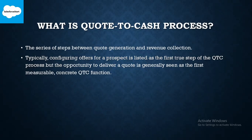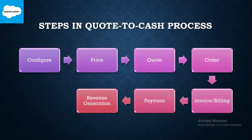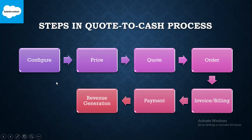I will just go to the steps and show you in the diagram itself. If you see here, the steps flow in this way for the Quote-to-Cash process. The first step is configuration of products, product offers, additional discounts, along with configuration of pricing.